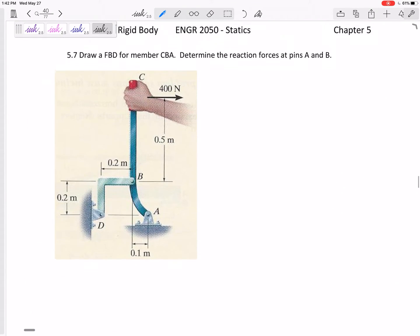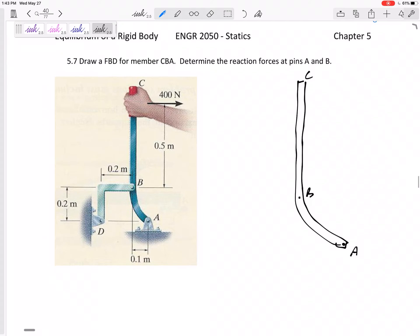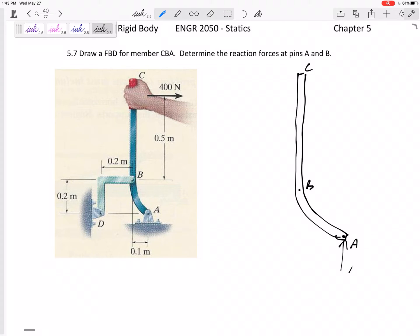Let's look at this next one. If I was to draw a free body diagram of this handle CBA, then at A, I've got an AY and an AX because it is a pin. At C, I've got a 400 newton force. At B, my instinct is to draw a BX and a BY, but I would have too many unknowns. I'd sum my forces. I only have three equations and I would have four unknowns.